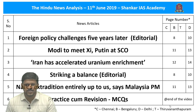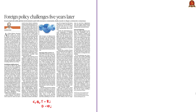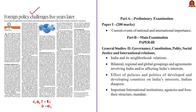Now let us move on to the first news article. This editorial is about foreign policy challenges that India faces compared to five years ago, simply between 2014 and the present time 2019. This will be part of your prelims under current events of national importance and in mains GS paper 2 under India and its neighborhood relations, bilateral, regional and global groupings and agreements involving India and affecting India's interests, and also under effect of policies of developed and developing countries on India's interests and Indian diaspora.